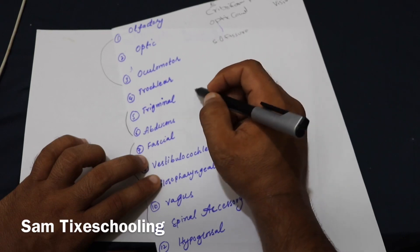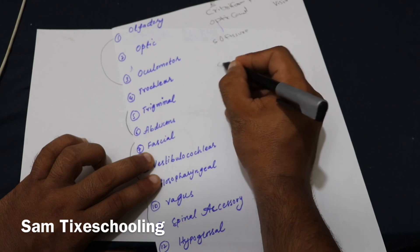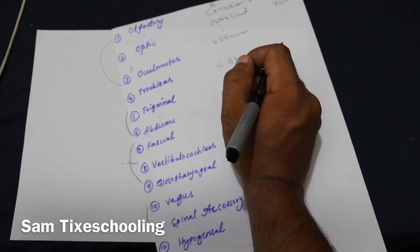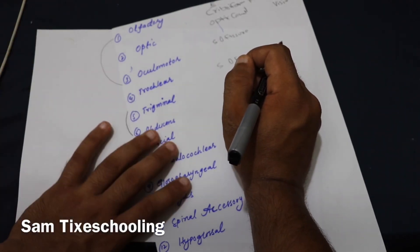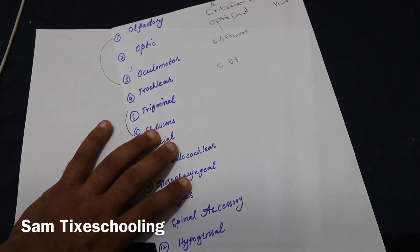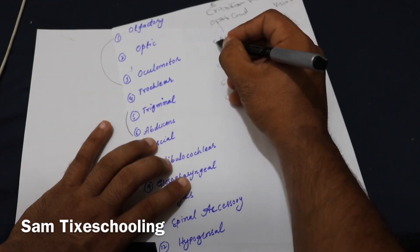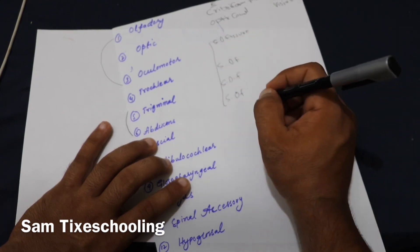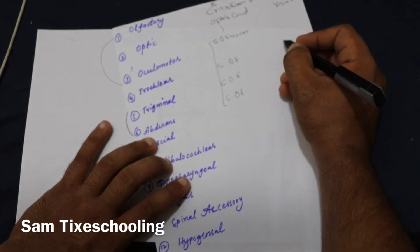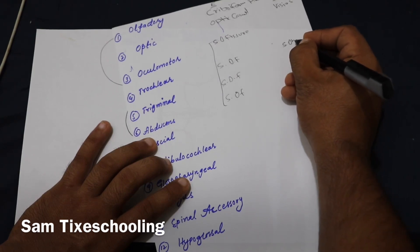The fourth nerve is the trochlear nerve, and it also exits from the superior orbital fissure. Remember that the third, fourth, and sixth nerves all exit from the superior orbital fissure. The main function of the trochlear nerve is to supply the superior oblique muscle.